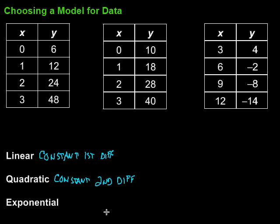And finally, for it to be exponential, we're going to look for a constant ratio between the values. In other words, it's being multiplied by the same thing to go from one to the next.